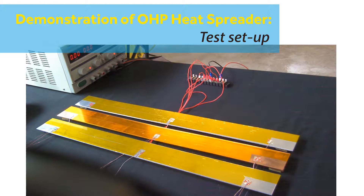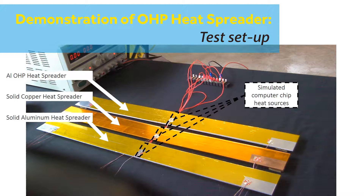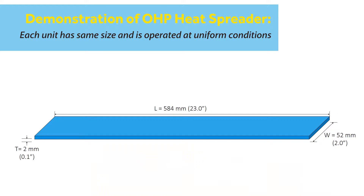Here is a simple demonstration of an oscillating heat pipe or OHP that can be used to acquire, spread, and more efficiently reject waste heat from a simulated computer chip to ambient air. In this example, an aluminum oscillating heat pipe heat spreader is compared to heat spreaders made from conventional thermal management materials of solid aluminum and copper.